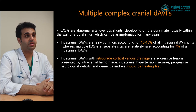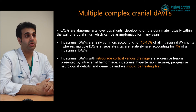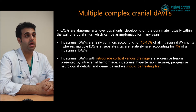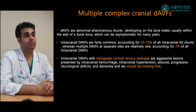Intracranial dural AV fistula with retrograde cortical venous drainage is an aggressive lesion, presenting with intracranial hemorrhage and intracranial hypertension, as in our case. Other manifestations such as seizure, progressive neurological deficit, and dementia can also occur, and these lesions should be treated promptly.